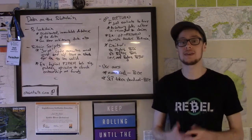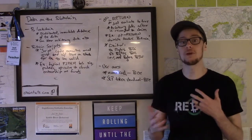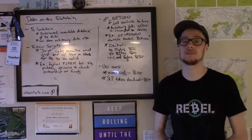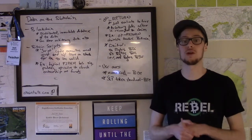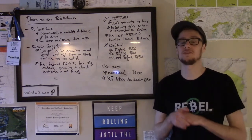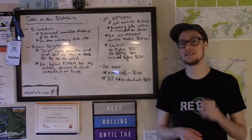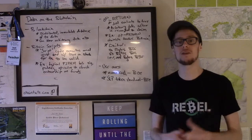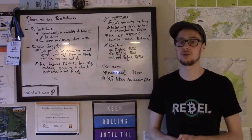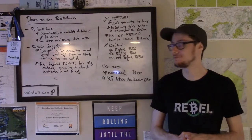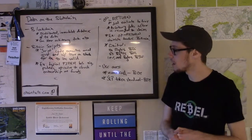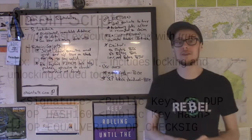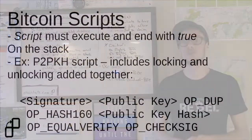Any Bitcoin node can also execute these transaction scripts to ensure that the transaction is indeed valid, and that's part of the decentralized nature of the Bitcoin protocol. So the important thing you need to know to understand this concept at a high level — and to understand the ability to add arbitrary data to the blockchain — is the key rule for a transaction script to be considered valid.